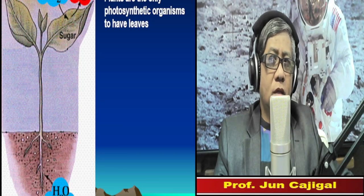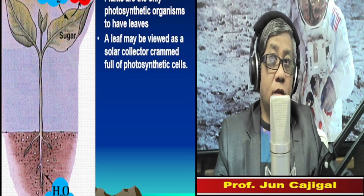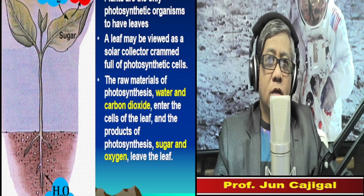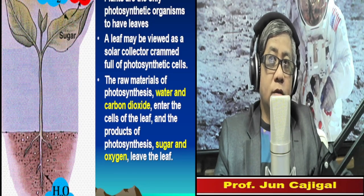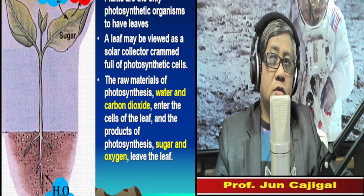Plants are the only photosynthetic organisms to have leaves, and a leaf can be considered as a solar collector. A leaf is crammed full of photosynthetic cells. The raw materials for photosynthesis include water from the soil absorbed by the plants via the roots, and carbon dioxide, which enters the plant via openings called stomata. The products of photosynthesis include sugar and oxygen; the oxygen is considered a waste gas and exits the leaf.